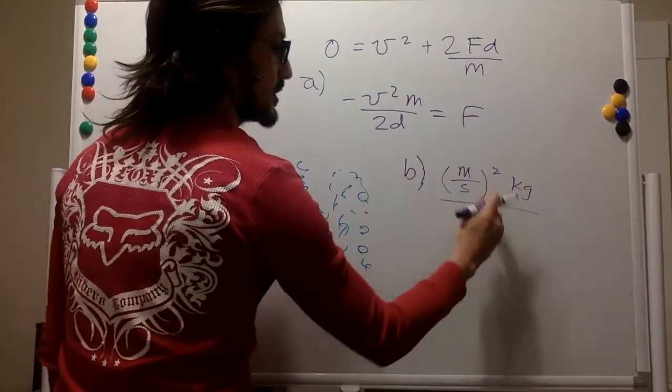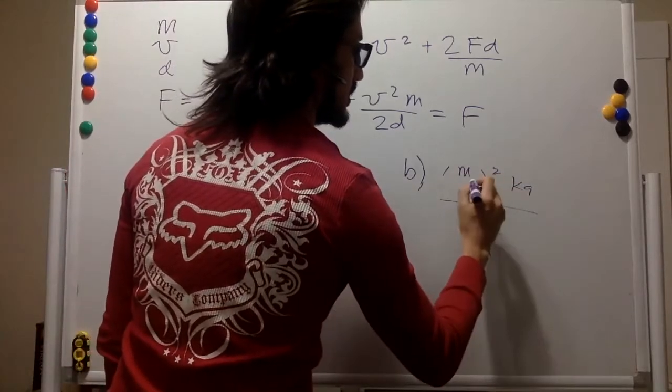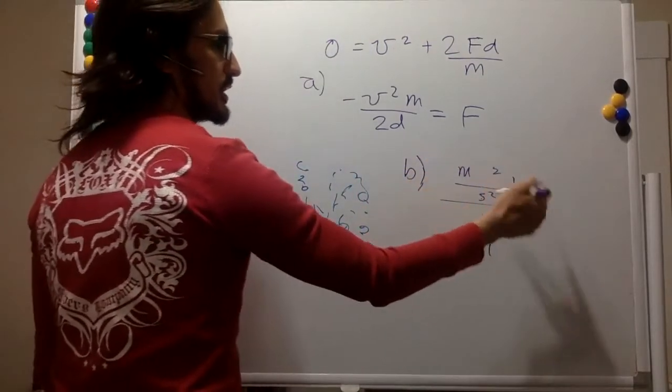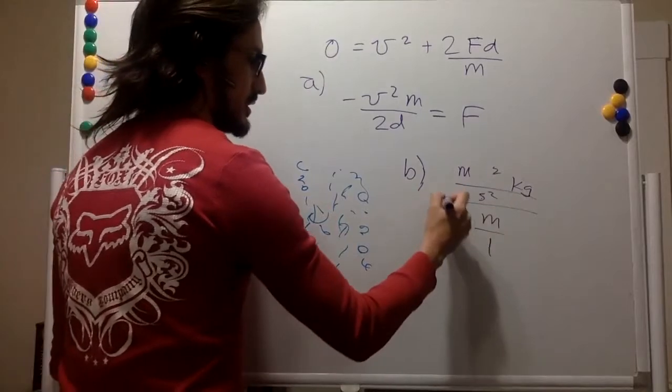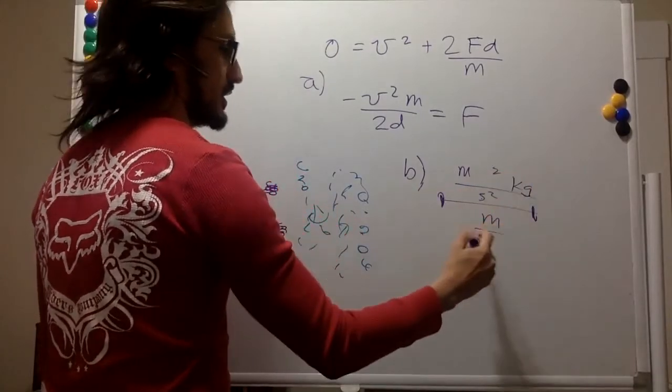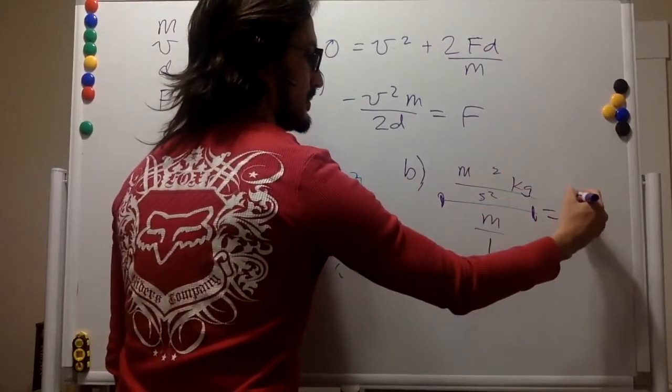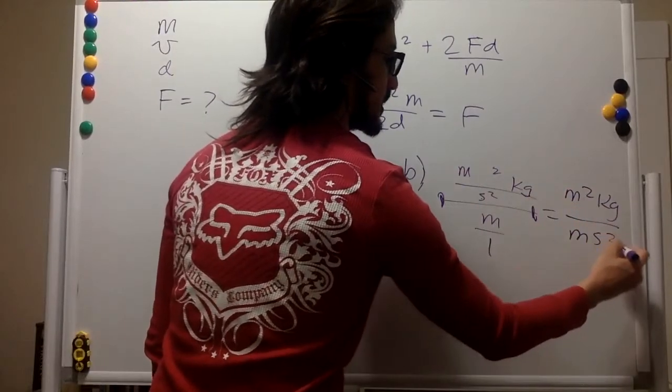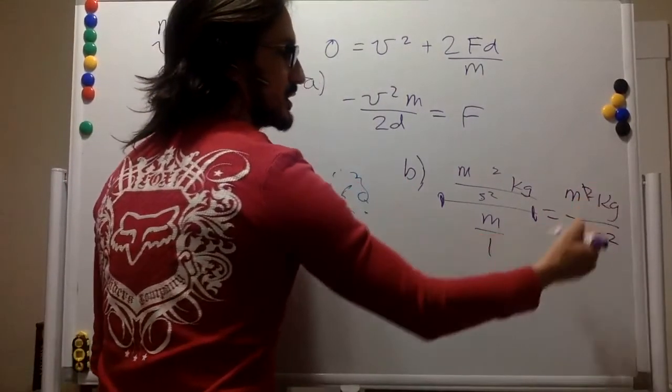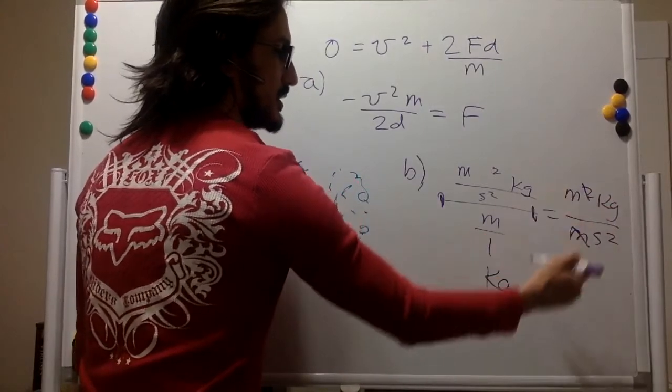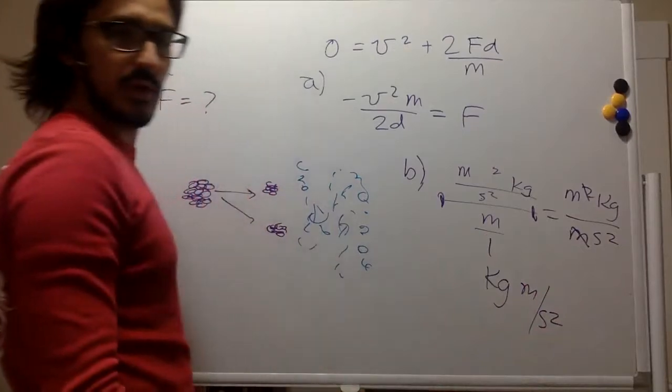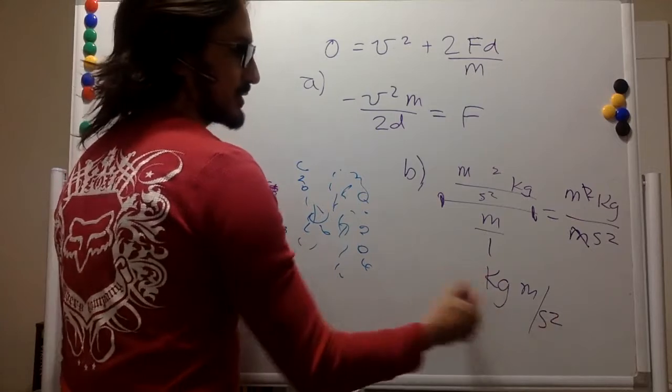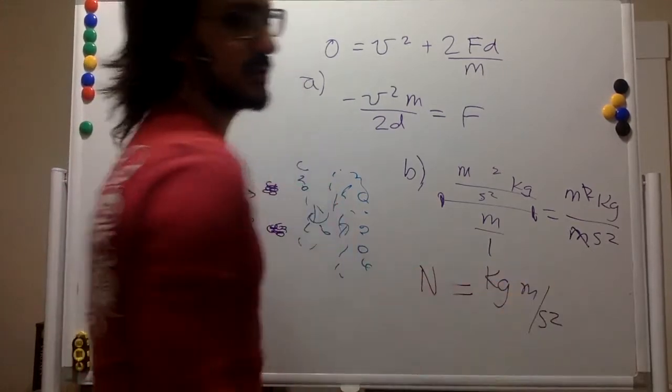Velocity squared is going to be this whole thing by this whole thing. So this is going to be a meter squared kilogram. Then this one and this one is meter second squared. This meter goes away with this one. And so we have kilogram meter per second squared. This is mass times acceleration, that's a force. So the units are correct. And this unit, we call it a Newton.